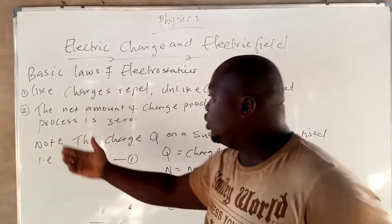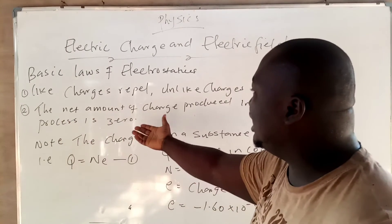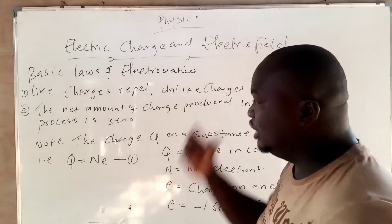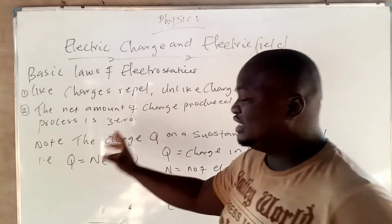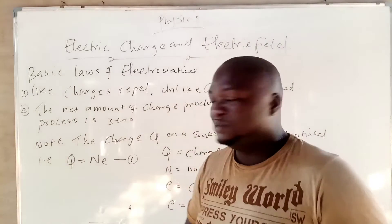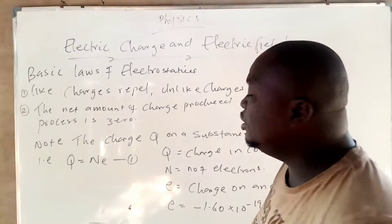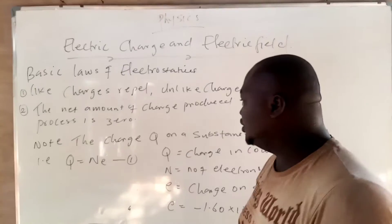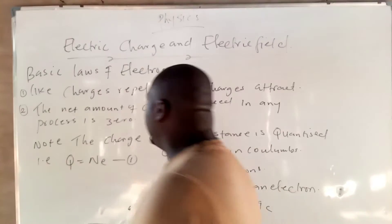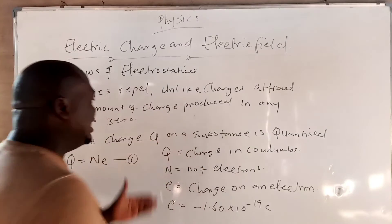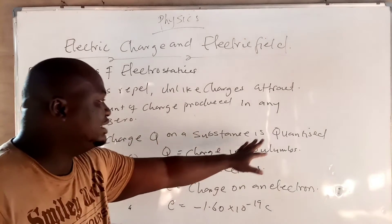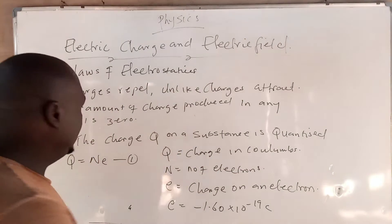Another second law is: the net amount of charge produced in any process is zero. Now, the charge on a substance is quantized.